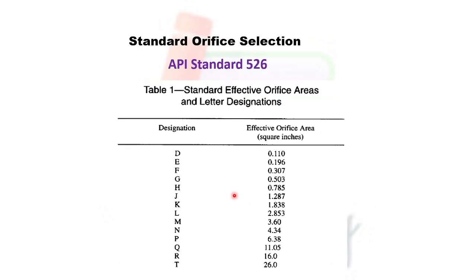After calculating the orifice size, we have to use API Standard 526. For example, if our calculated size is 0.09, we would select orifice designation D, because 0.09 is less than 0.11. Every orifice size less than 0.11 would require an orifice designation of D. If our calculated size exceeds 0.11, we would go to orifice size E. This is the table of standard orifice sizes available in API 526. After calculating the orifice size, we select the required standard orifice from this table.